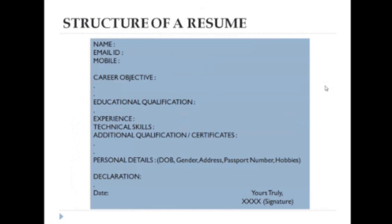Then there should be a subheading named 'Objective' or 'Career Objective.' Here, type 20 to 30 words to describe you. It should be loud and attractive — short and sweet. Make reference of objectives from the internet but write your own. I repeat: write your own objective, because your employers are going to find out if it is copied from the internet.